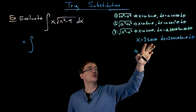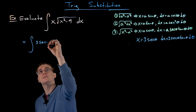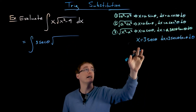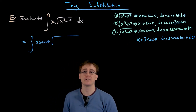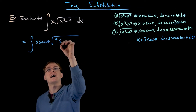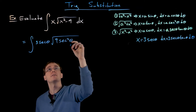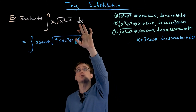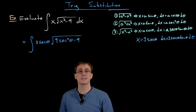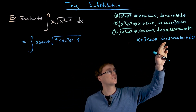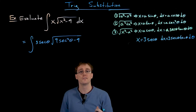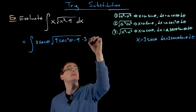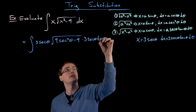Let's implement the substitution. The factor of x in front of the square root becomes 3 times secant of theta. Under the square root, x squared minus 9 becomes 9 times secant squared of theta minus 9. We also replace dx with 3 times secant of theta times tangent of theta d theta.